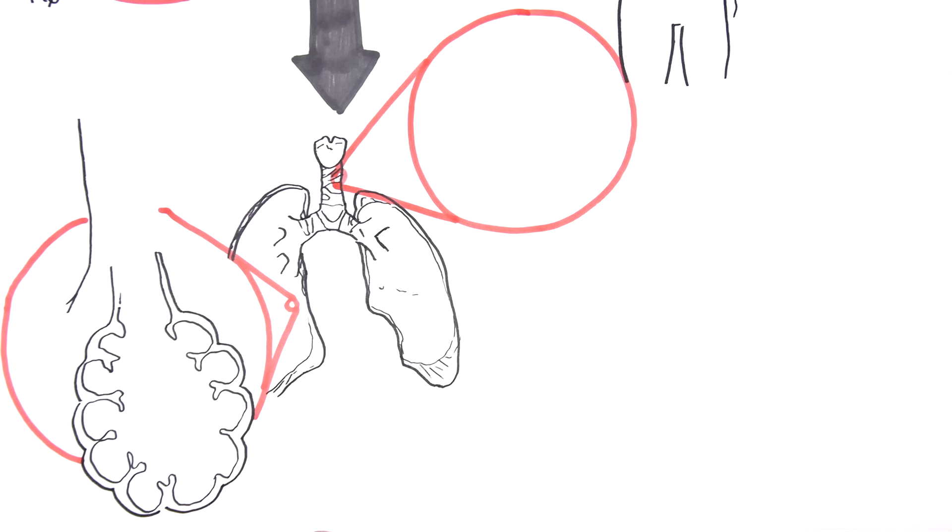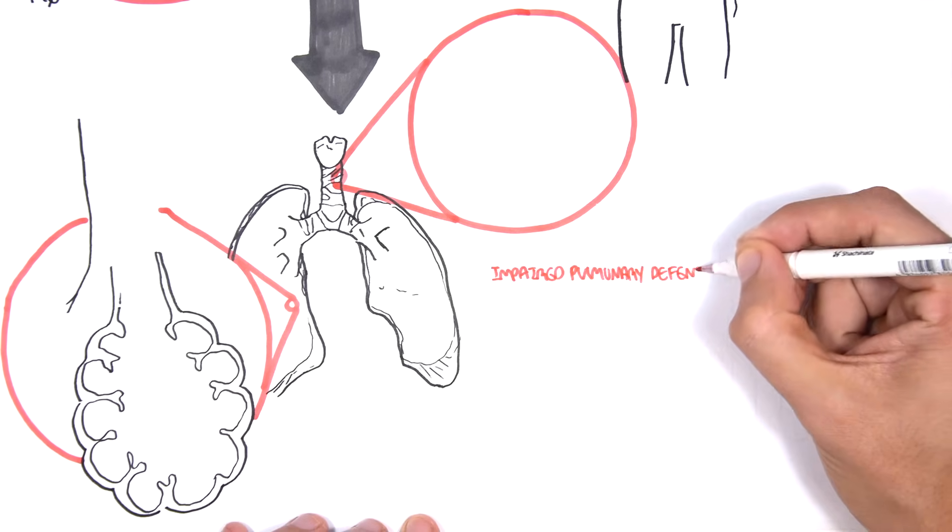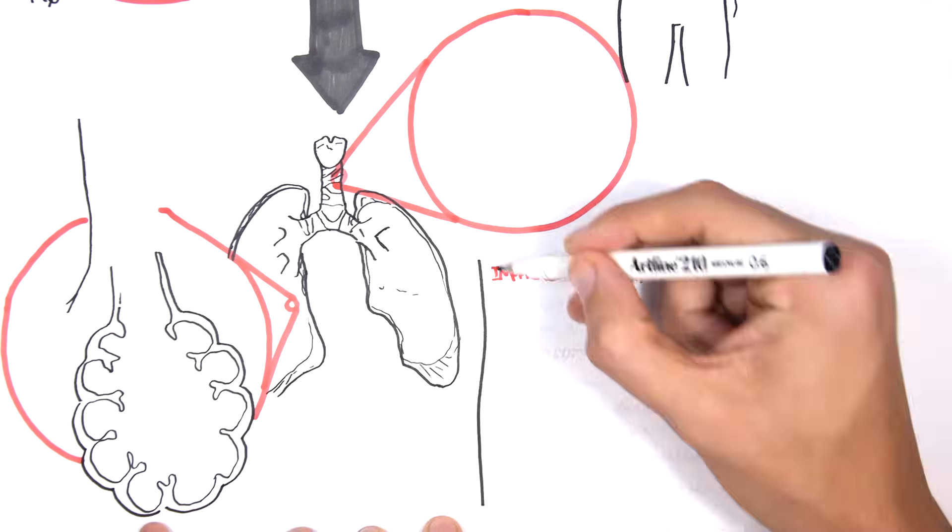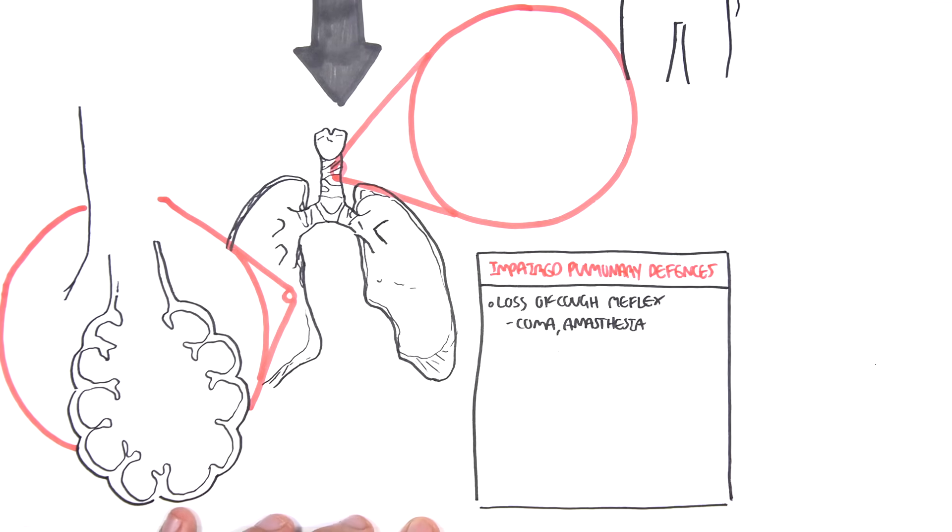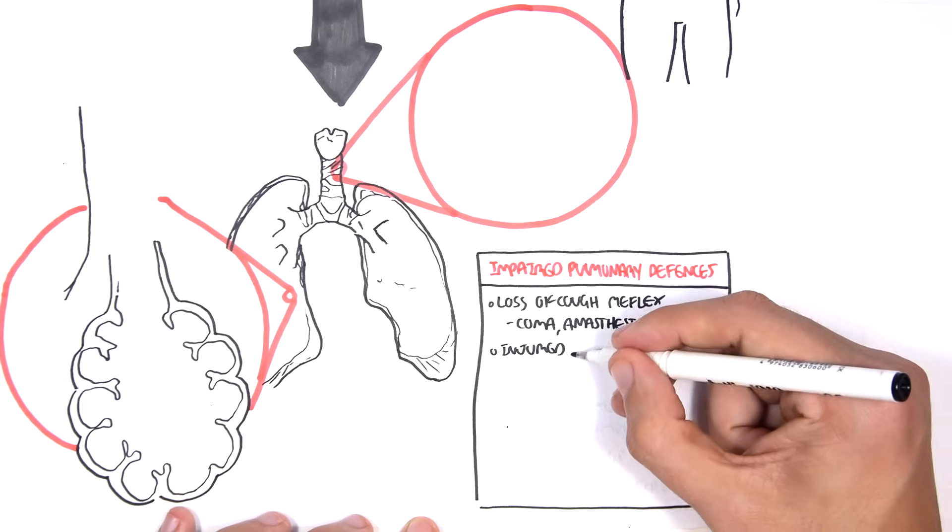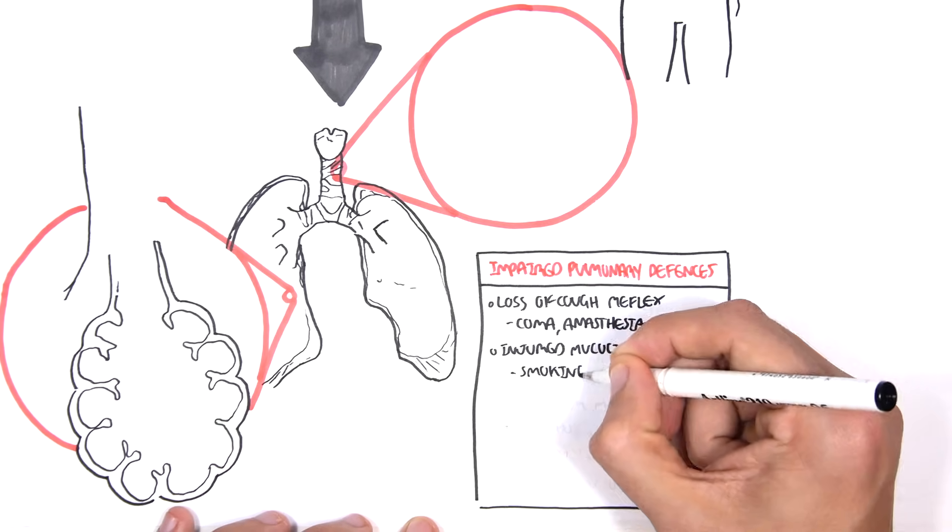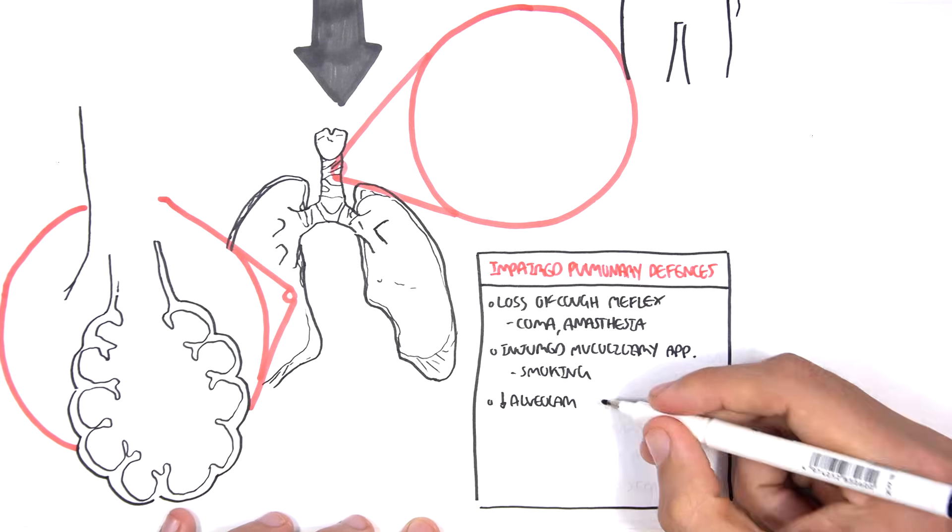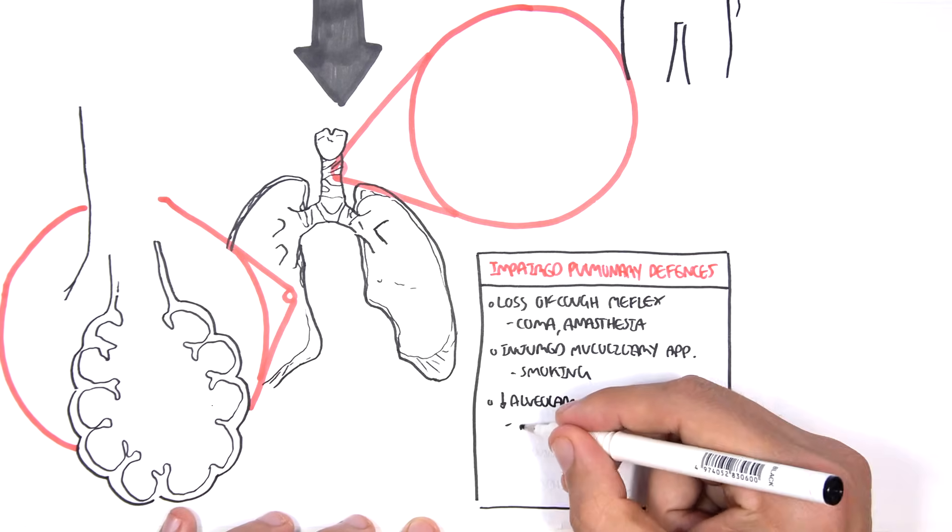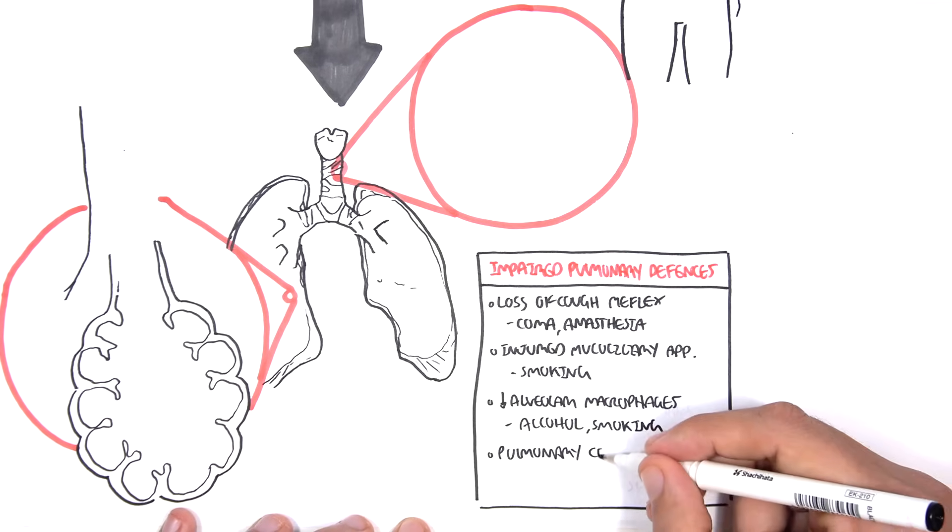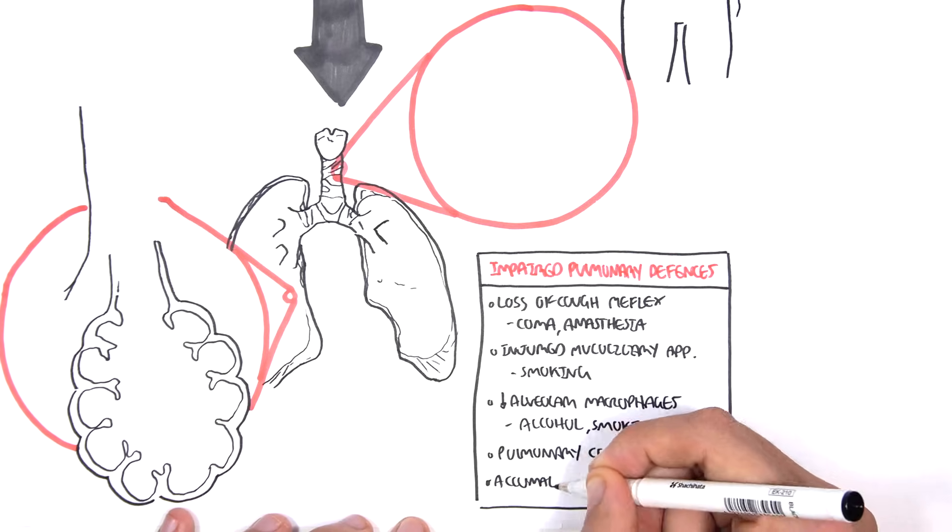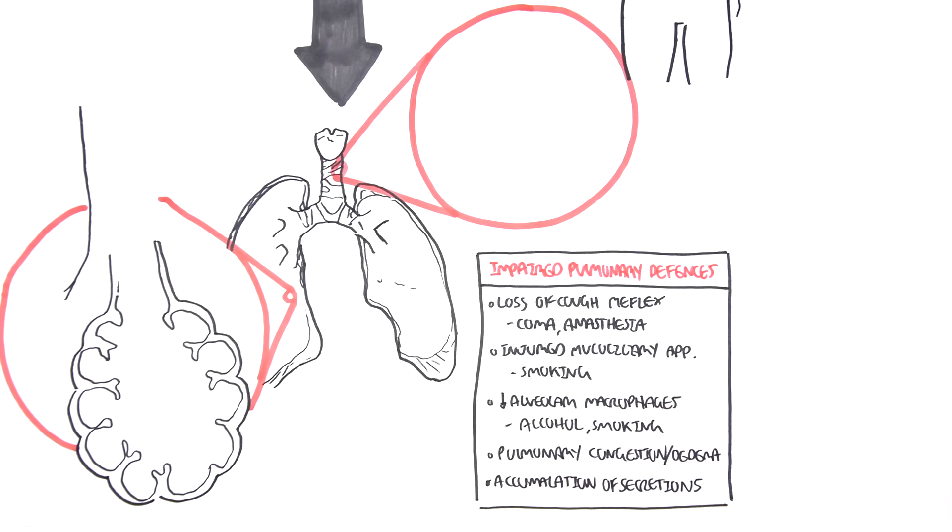So here I am just drawing the lungs again, the alveoli and the terminal bronchioles. So impaired pulmonary defense includes loss of the cough reflex as seen in coma or use of anesthetic, injured mucociliary apparatus due to smoking, decrease in alveolar macrophages from alcohol and smoking, pulmonary congestion, edema, and accumulation of secretions such as cystic fibrosis. Again, these are examples of impaired pulmonary defenses which makes one more susceptible to lung infections.